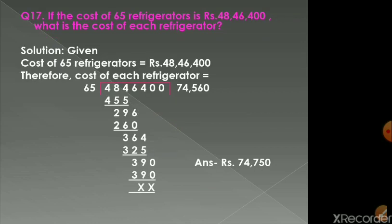Next, question number 17. If the cost of 65 refrigerators is rupees 48,46,400, what is the cost of each refrigerator? This is the opposite of the previous question — the cost of more refrigerators is given and we need to find the cost of one. So in such cases, we divide.